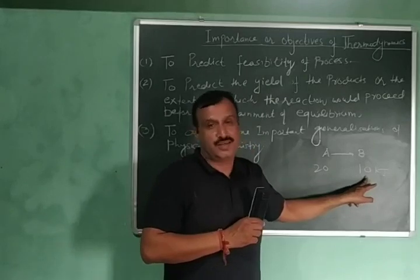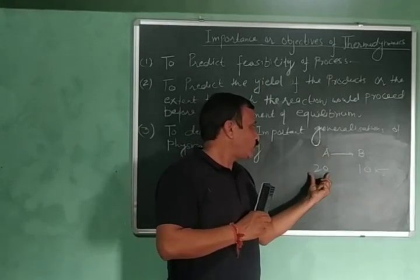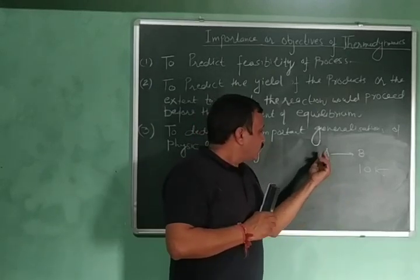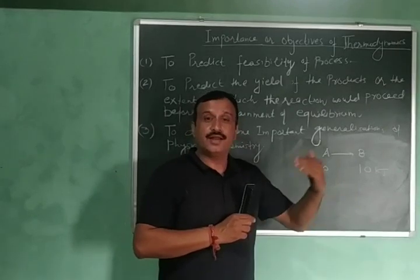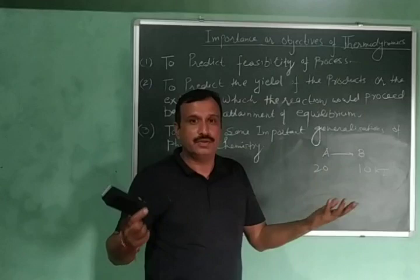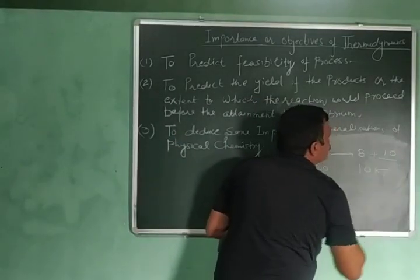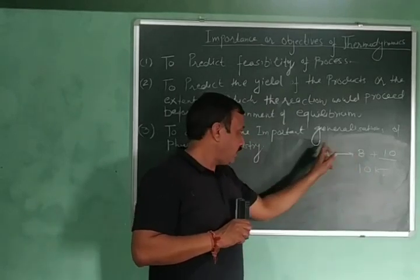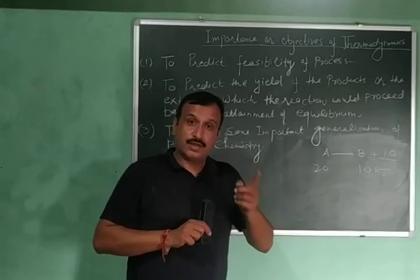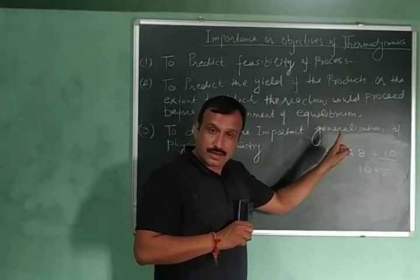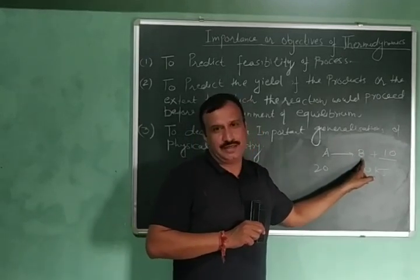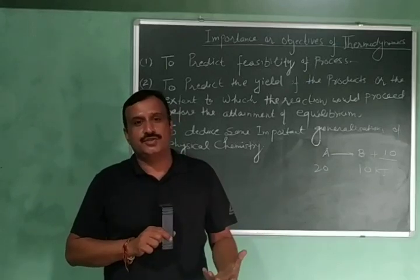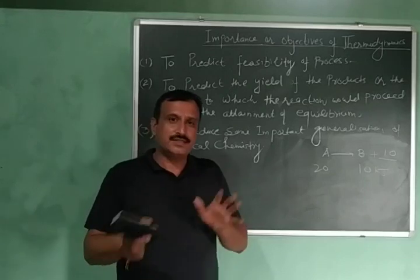Now, since energy has to be conserved, if A has energy 20 and is converted to B with energy 10, the remaining 10 kilojoules must go to the surroundings — that energy will be released. So when B has less energy than A, energy is released. I can conclude that when a less stable system converts into a more stable system, energy will always be released and the process will be spontaneous. So exothermic reactions are spontaneous — they are energetically favoured.